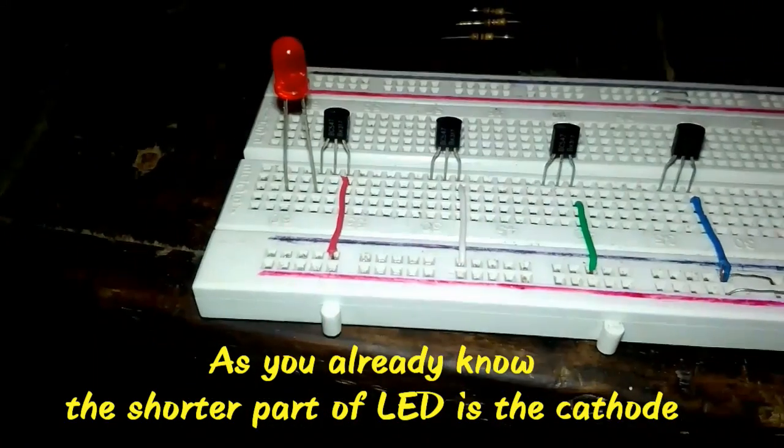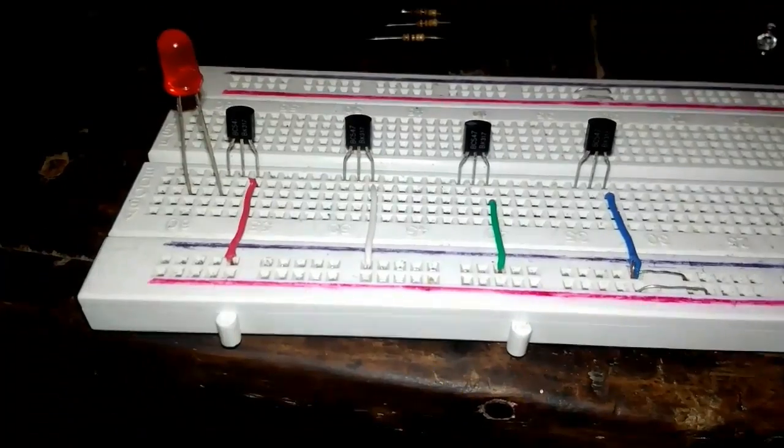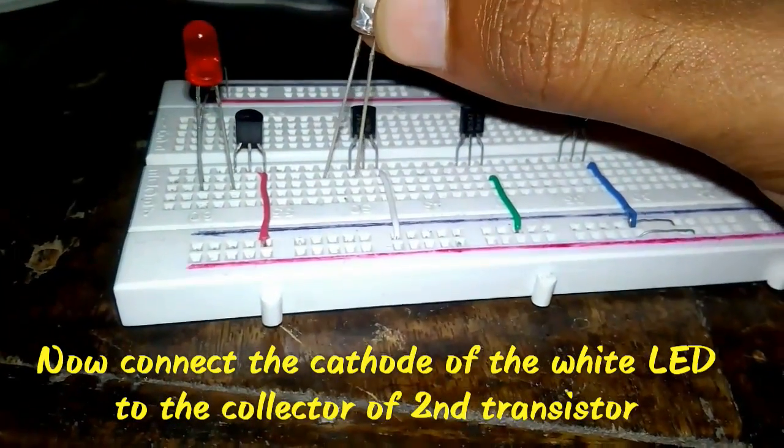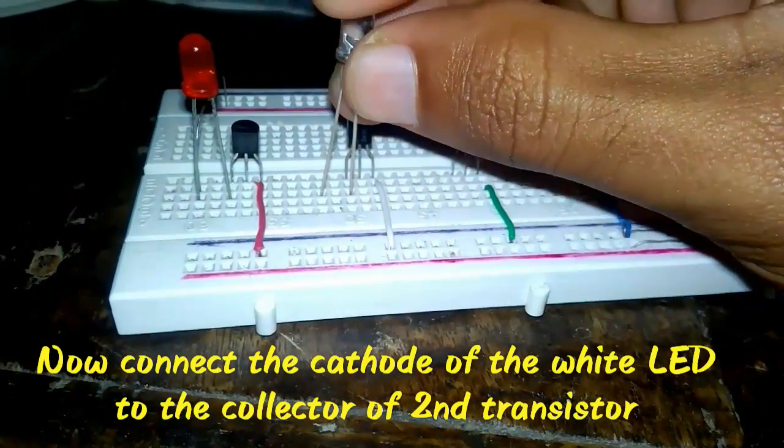Now connect the cathode of the white LED to the collector of the second transistor.